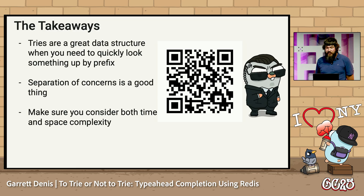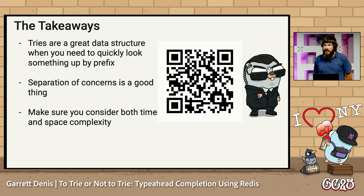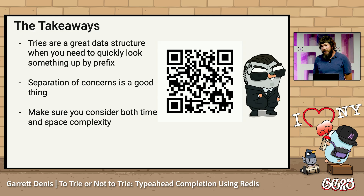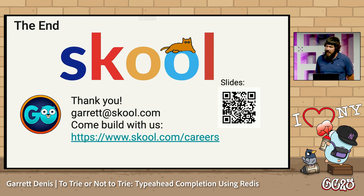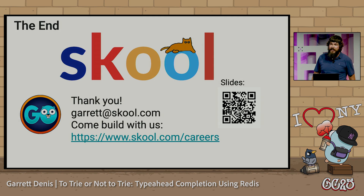So, what are our takeaways? Trees are a great data structure when you need to look something up quickly by prefix. Separation of concerns is a good thing — you can isolate your infrastructure, keep your database moving quickly, and don't tie it up for the critical path. And the other thing here is just making sure that you consider both time and space complexity. The trade-off was we made search fast, but we're taking up more memory over time. It's going to depend on your use case which one you want to pick. Thank you. If you guys have any questions, send an email, find us at our booth, or join us at School.